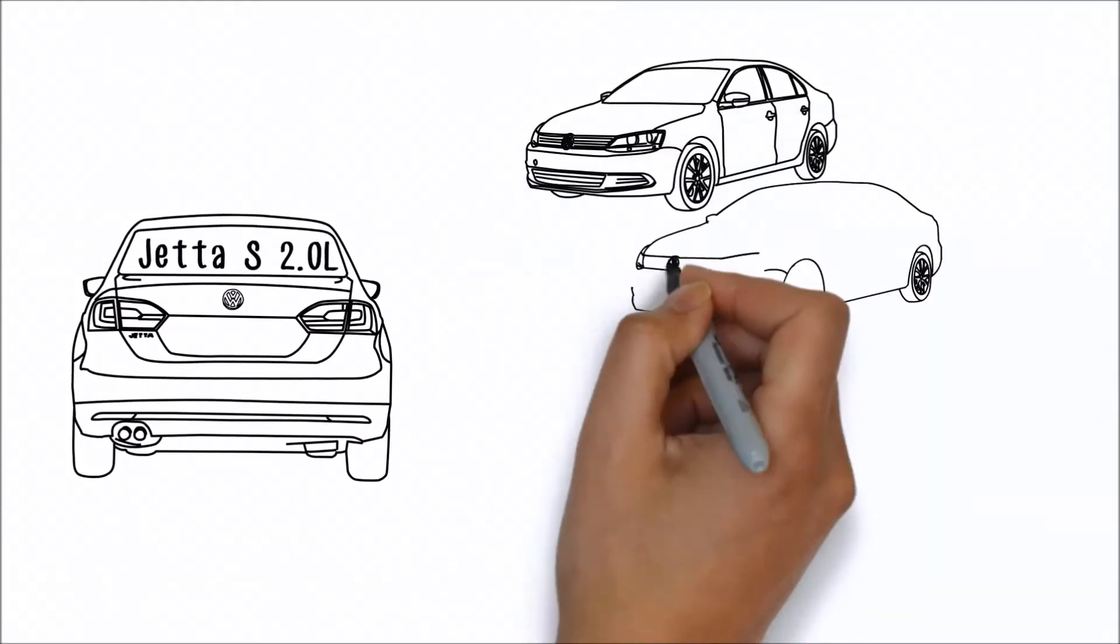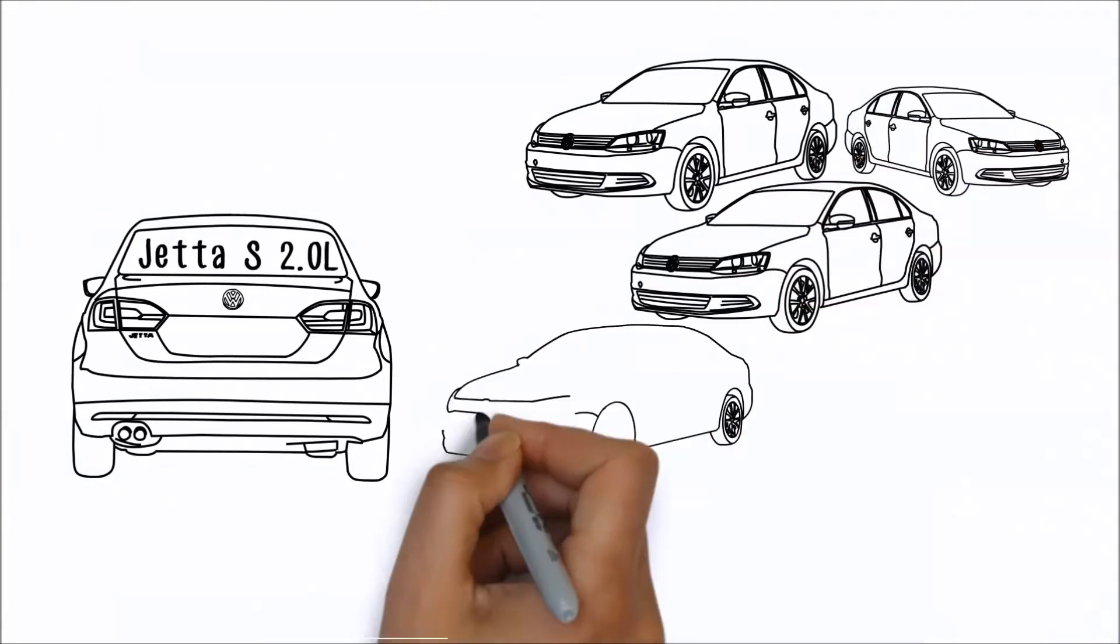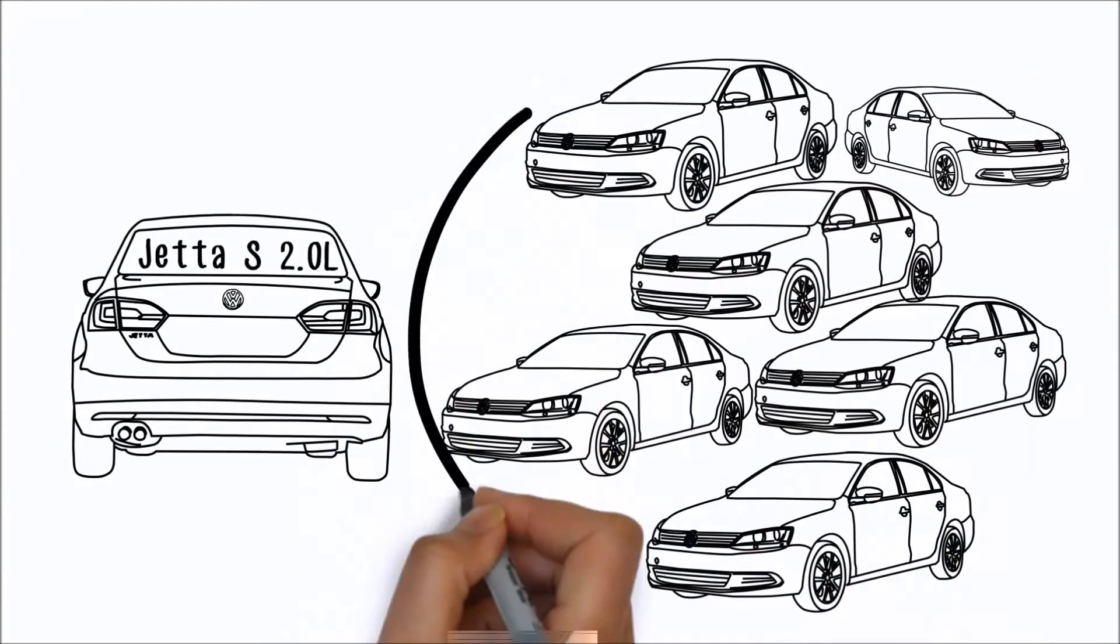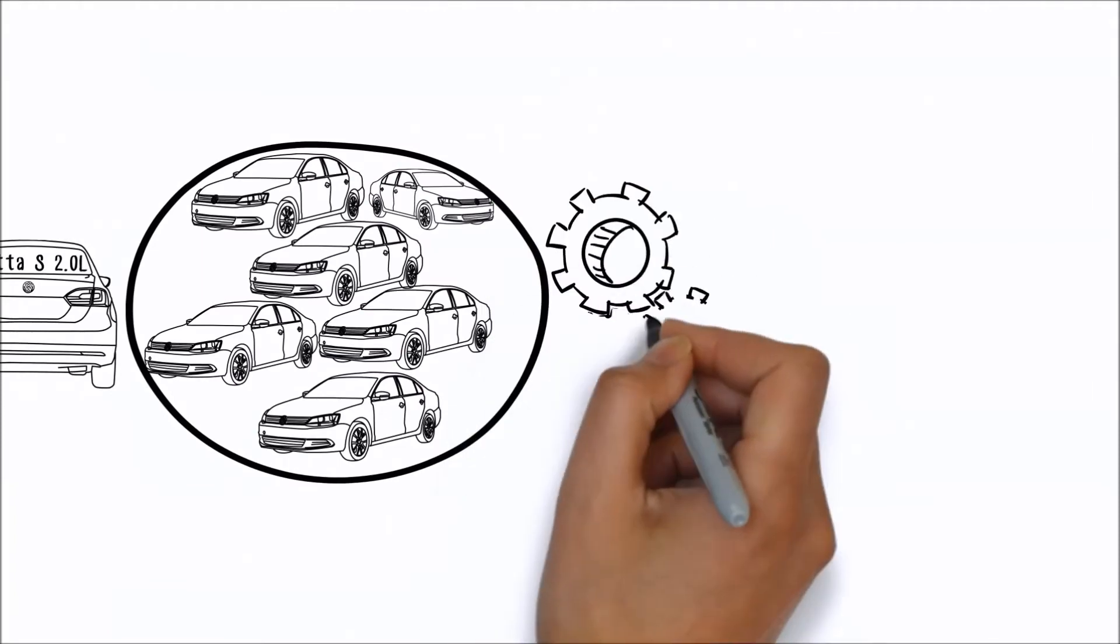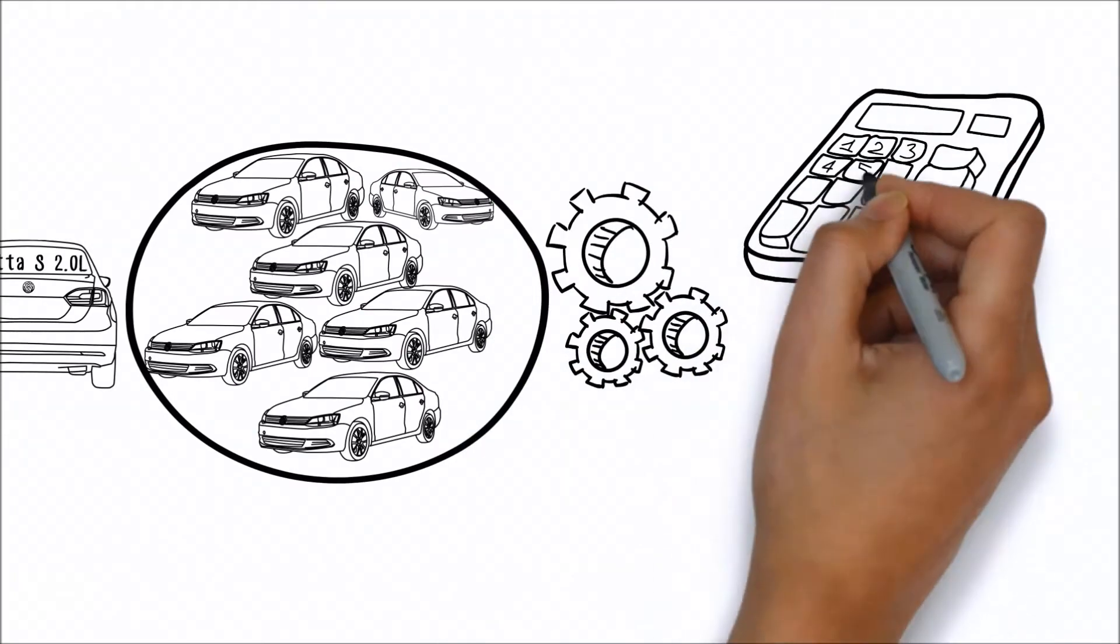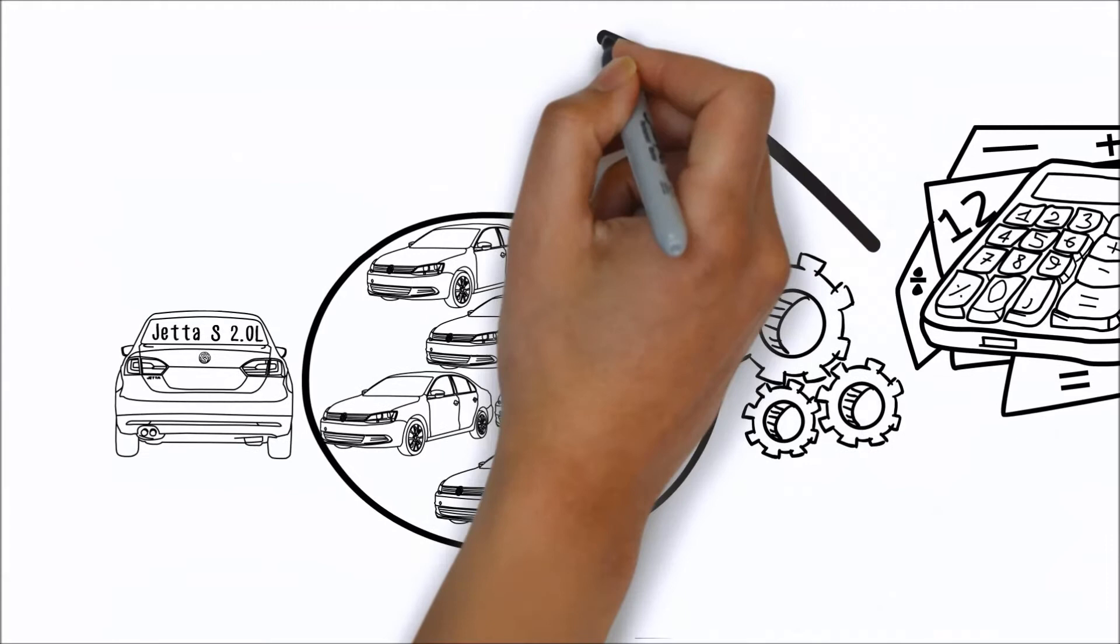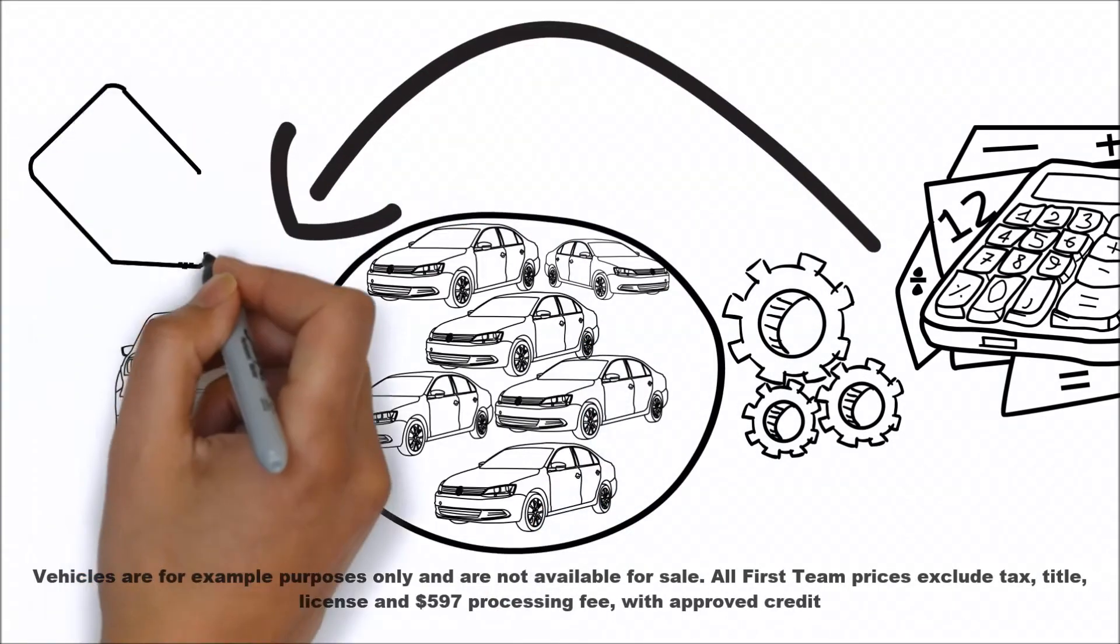Our software tells us that there are 64 similar vehicles within a 150-mile radius of us. Then it automatically calculates all manufacturer rebates and incentives. We then add our additional dealer discount to price the vehicle as low as we can.